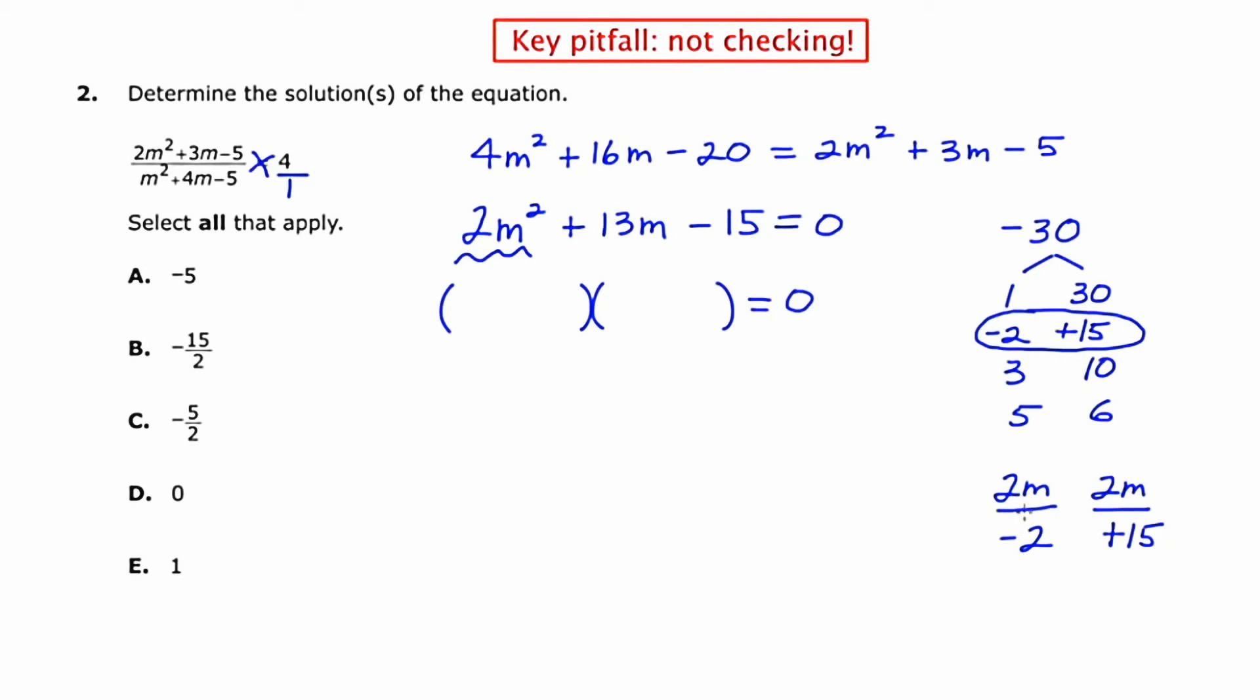So the 2 and the 2 are going to cancel. So instead of saying 2m minus 2, I'm going to say m minus 1. And then over here, this turns into 2m plus 15. That can't be reduced. And maybe we could do a quick foil to check. m times 2m is 2m squared. And then we have 15m minus 2m is 13m minus 15. Okay, so this works.